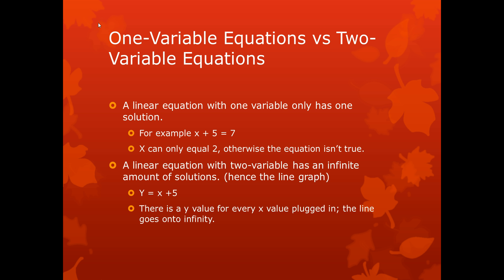So, one variable equations versus two variable equations. A linear equation with one variable only has one solution. For example, x plus 5 is equal to 7. x has to equal 2. Otherwise, the equation isn't true. x can't equal 3, it can't equal 4, because the equation is not true otherwise.